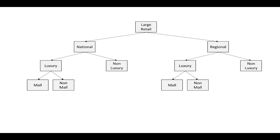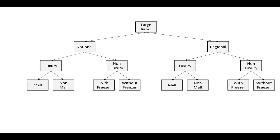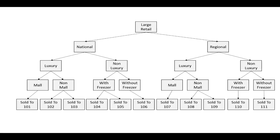For non-luxury stores, it's actually more important whether they have a freezer or not. Assigning a sold-to to the bottom of one of these branches effectively categorizes that sold-to for all those levels. So in this example, we have four different levels and on the bottom is the sold-to. Not all customers are large retail — some may be gas stations or whatever classification is needed. A company can decide that gas station may have the same structure as large retail or something completely different. You do not need four levels for the hierarchy; it can be as many levels as you need.